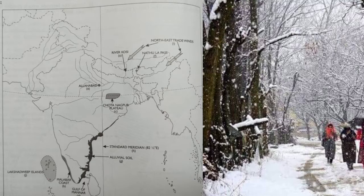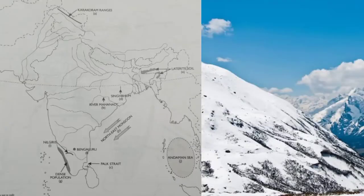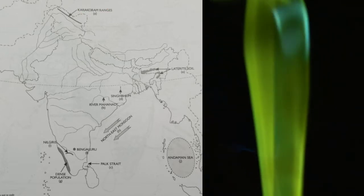Next map: mark with a bold line and name the Karakoram Range. Next, trace the course of river Mahanadi.